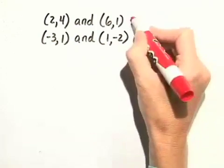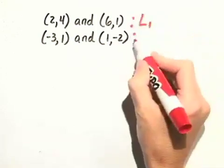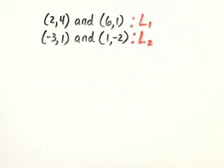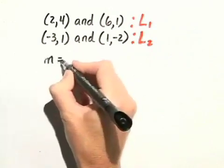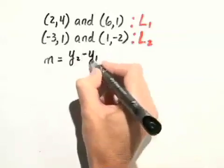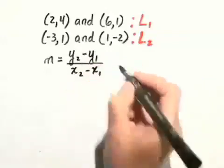Let's call the line passing through the first two points L sub 1 and the line passing through the second two points L sub 2. The formula for the slope of a line is given by y sub 2 minus y sub 1 over x sub 2 minus x sub 1.